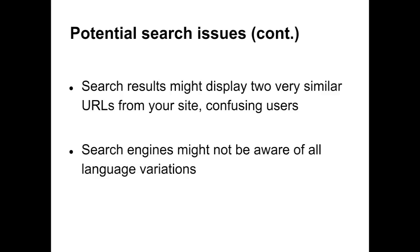Another potential search issue is when search results display two nearly identical URLs from the same site, which may confuse users when only one URL was more relevant. The third issue is when a site owner expands to a new language or country-based language variation, and search engines omit the new language URL because they're completely unaware that new pages were created. These are the three potential search issues we're hoping to prevent.